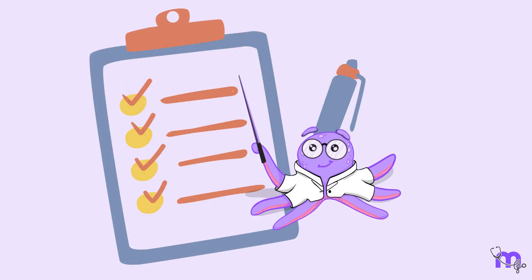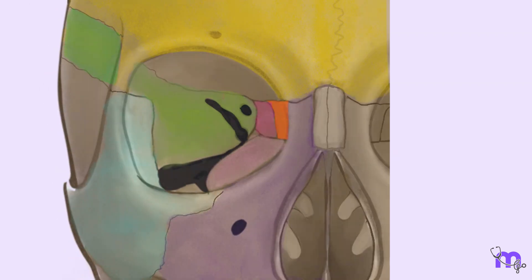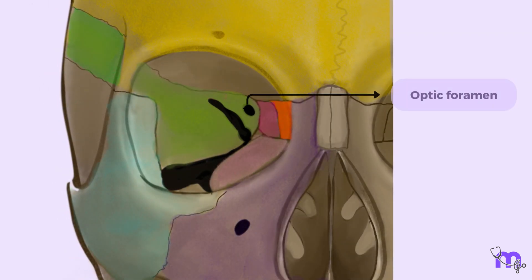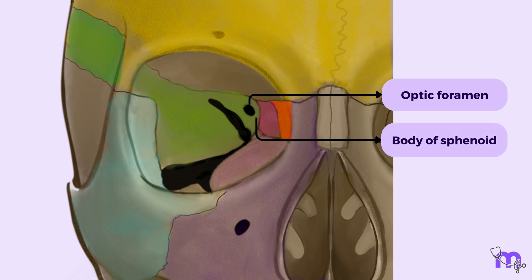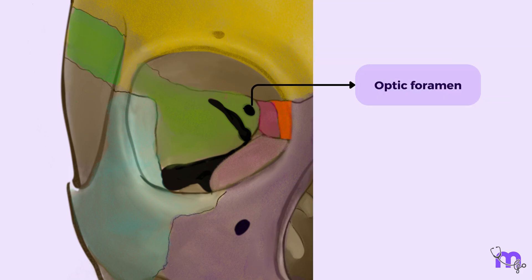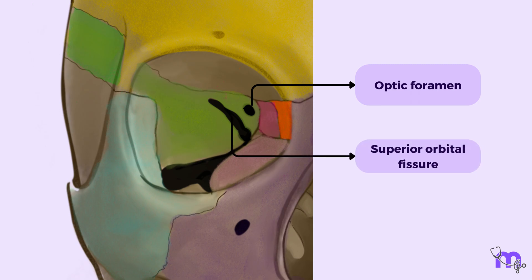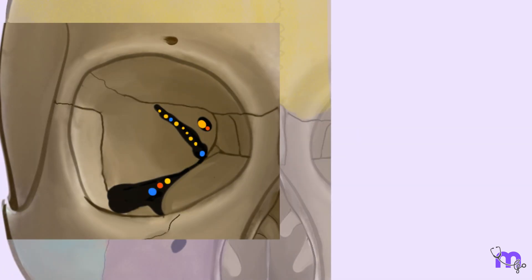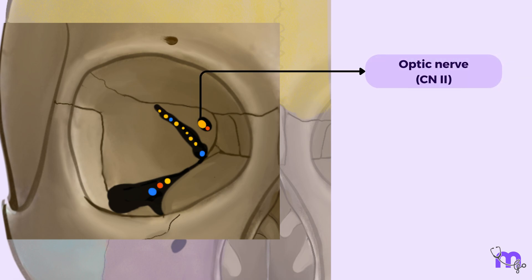First, let's talk about the apex. The most important feature here is the optic foramen, bound medially by the body of the sphenoid bone and laterally by the lesser wing of the sphenoid bone. This structure lies adjacent to the superior orbital fissure. Within its confines, the optic foramen plays host to the second cranial nerve — the optic nerve — along with the ophthalmic artery, offering them a path to venture beyond the confines of the skull.